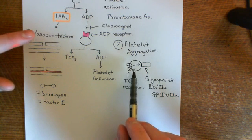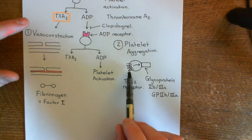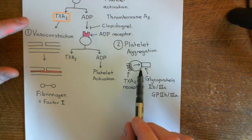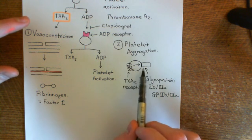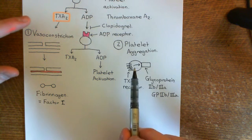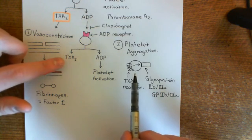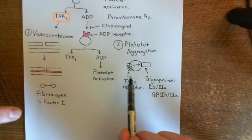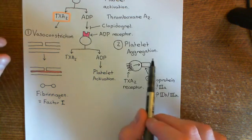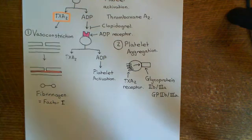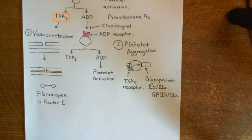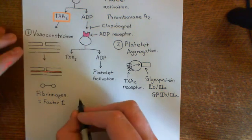Once thromboxane A2 has bound to the thromboxane A2 receptor and activated the glycoprotein 2B/3A, I want to be very careful here: this process of thromboxane A2 activating the glycoprotein 2B/3A is NOT platelet activation. Platelet activation is the name for the platelet starting to produce ADP and thromboxane A2. This is the reaction which makes the platelets sticky. Once you have activated the GP2B/3A, this GP2B/3A can bind to one of the lobes of fibrinogen.